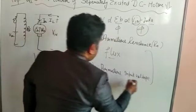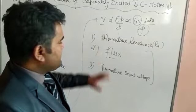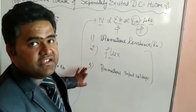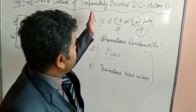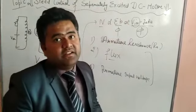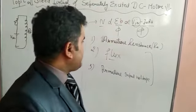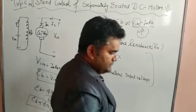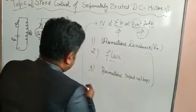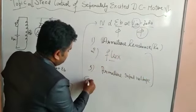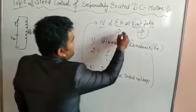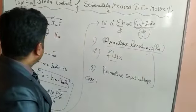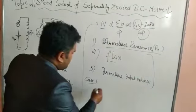With the help of these three parameters we can change the speed of the DC motor, and specifically we are discussing the separately excited DC motor. Now from the first method — Case 1 — we can change the speed by changing the armature resistance.